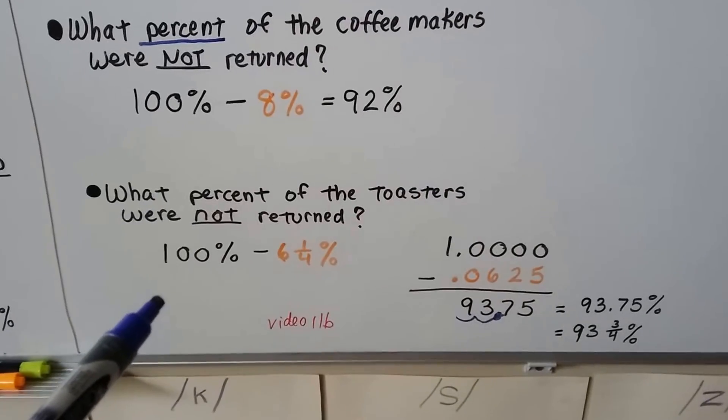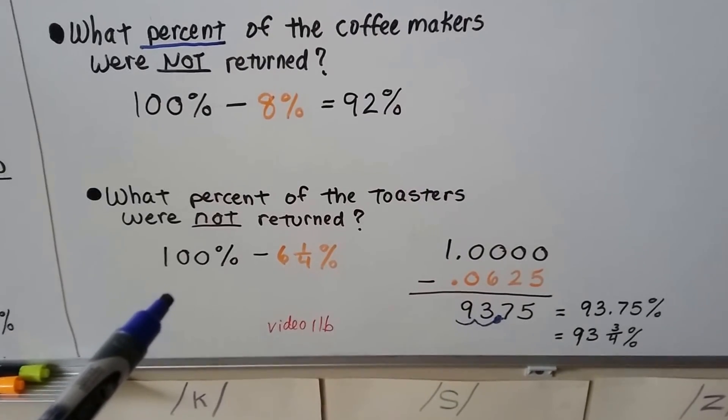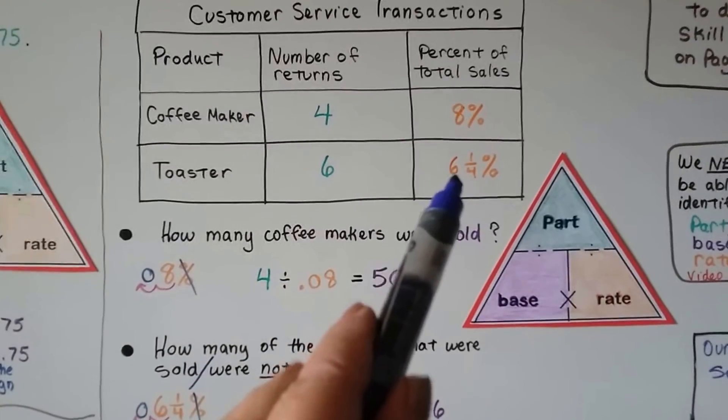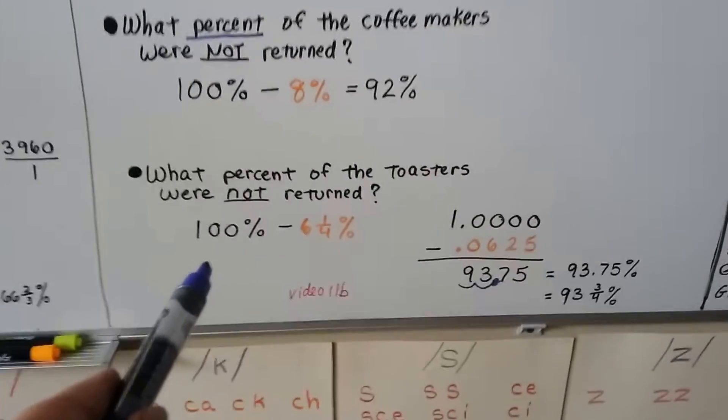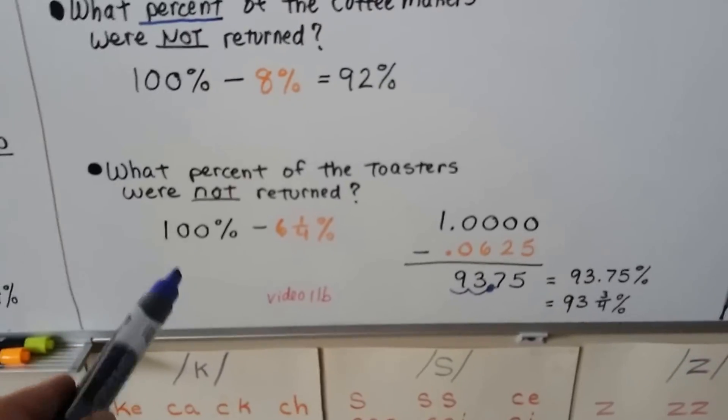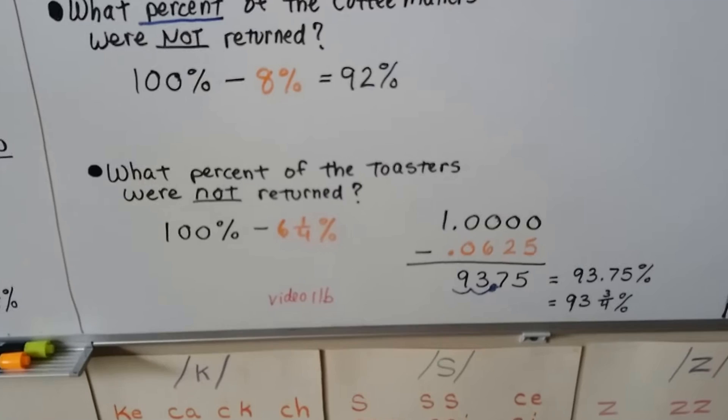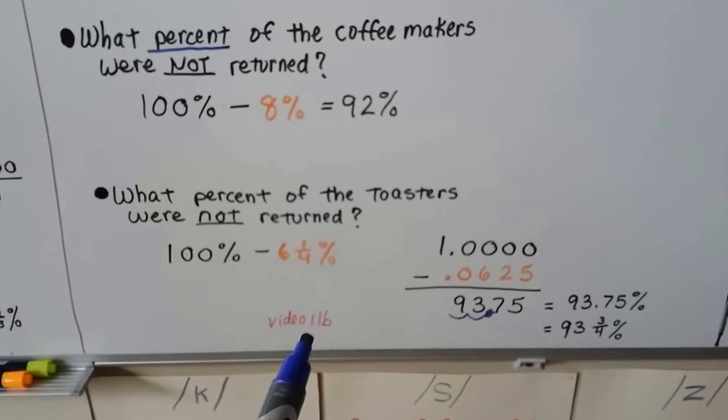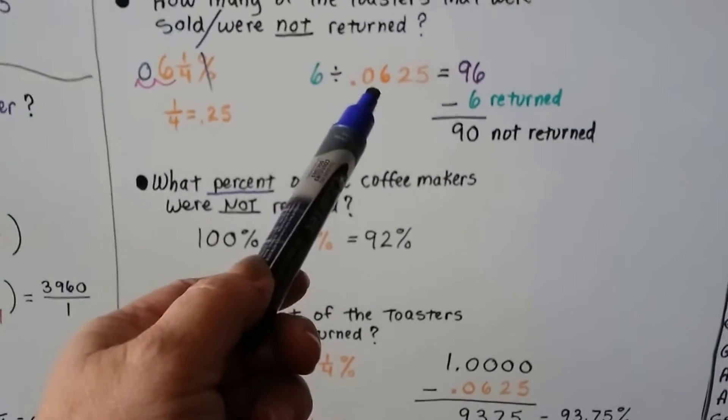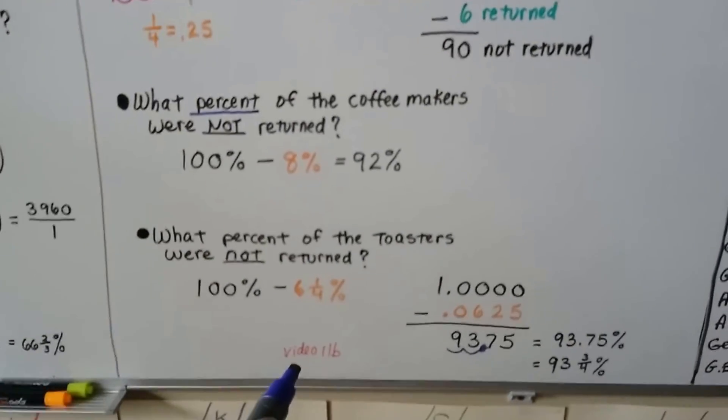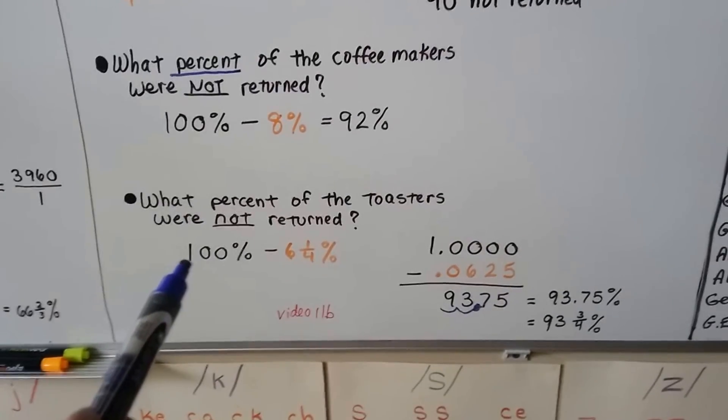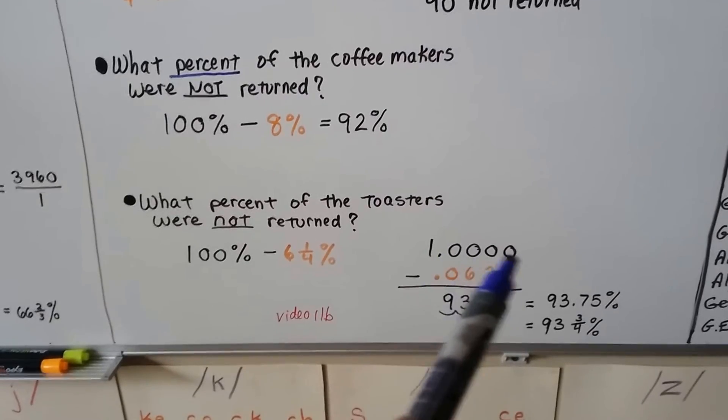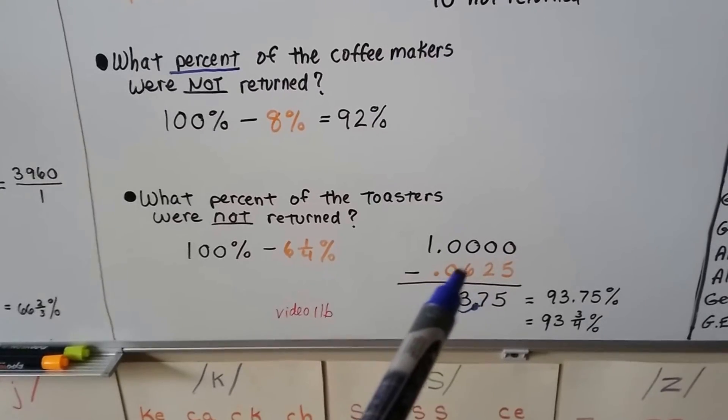Now look at this one. It says, what percent of the toasters were not returned? Well, we know 6 and 1/4 percent were returned. If we use the 100% as all of the toasters sold, we need to subtract 6 and 1/4 percent. Turning this into a decimal is going to help us. We already know what this is as a decimal. We did it up here. It's .0625. 100% is one whole, isn't it? So we would have to add a decimal place and some zeros in order to subtract .0625.